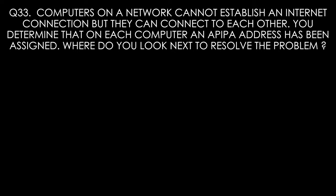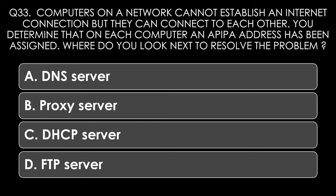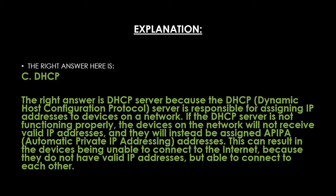Question thirty-three. Computers on a network cannot establish an internet connection, but they can connect to each other. You determine that an APIPA address has been assigned on each computer. Where do you look next to resolve the problem? Options: DNS server, proxy server, DHCP server, or FTP server. The right answer is DHCP server. The DHCP server is responsible for assigning IP addresses to devices. If it is not functioning properly, devices will not receive valid IP addresses and will instead be assigned APIPA addresses, resulting in the inability to connect to the internet while still able to communicate with each other.